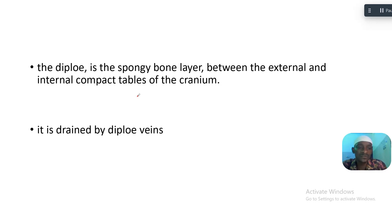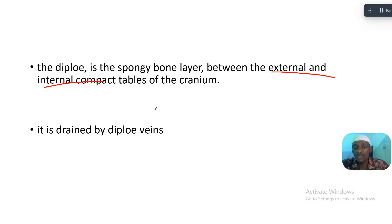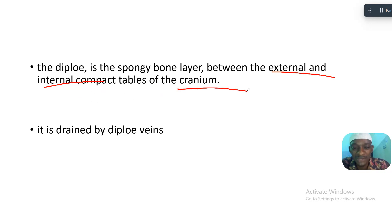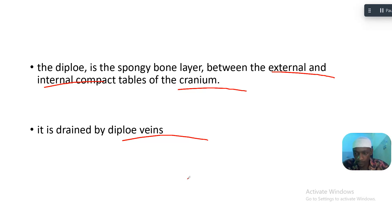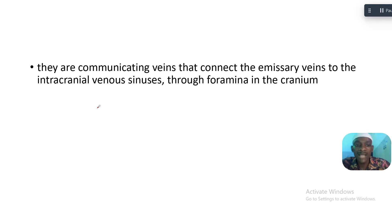The diploe is a spongy bone layer between the external and the internal compact tables of the cranium. The diploic veins are located within the diploe — the spongy compartment between the internal and external compact bones of the skull.